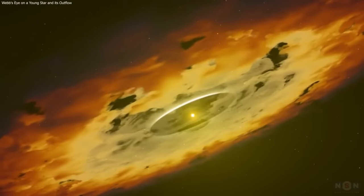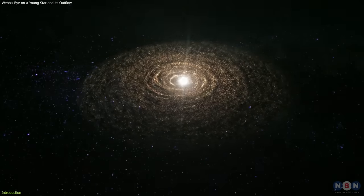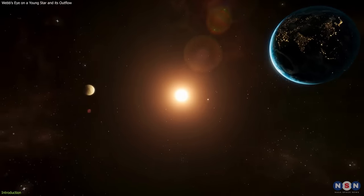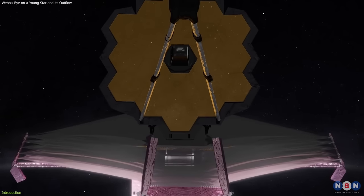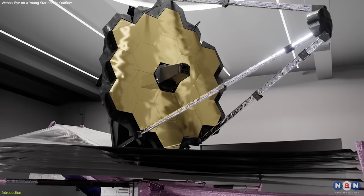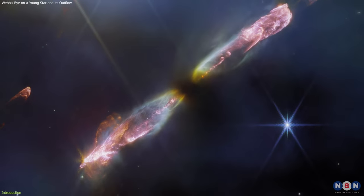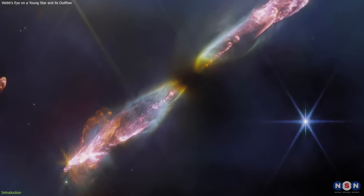Have you ever wondered how our Sun was born and how it evolved? How did it shape its surroundings and influence the formation of planets and life? If you are curious about these questions, then you will be amazed by the latest discovery from NASA's James Webb Space Telescope, one of the most powerful and complex space telescopes ever built. It has just snapped a stunning image of a young star and its outflow in unprecedented detail.